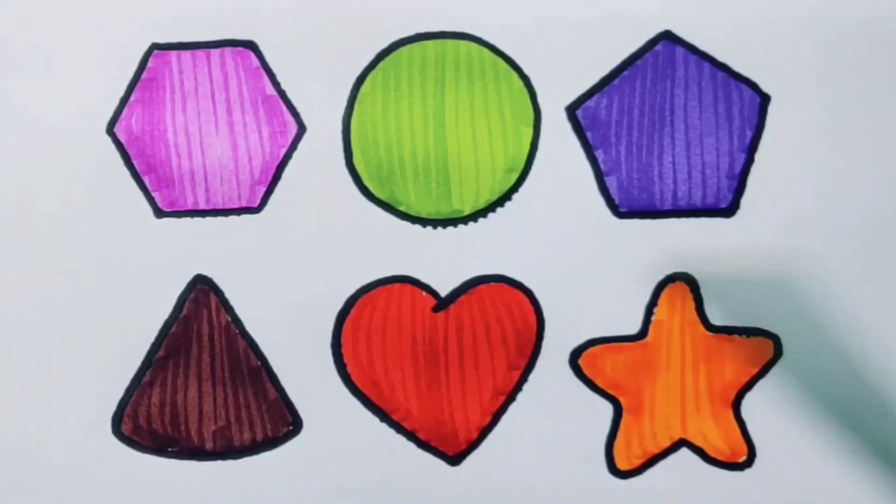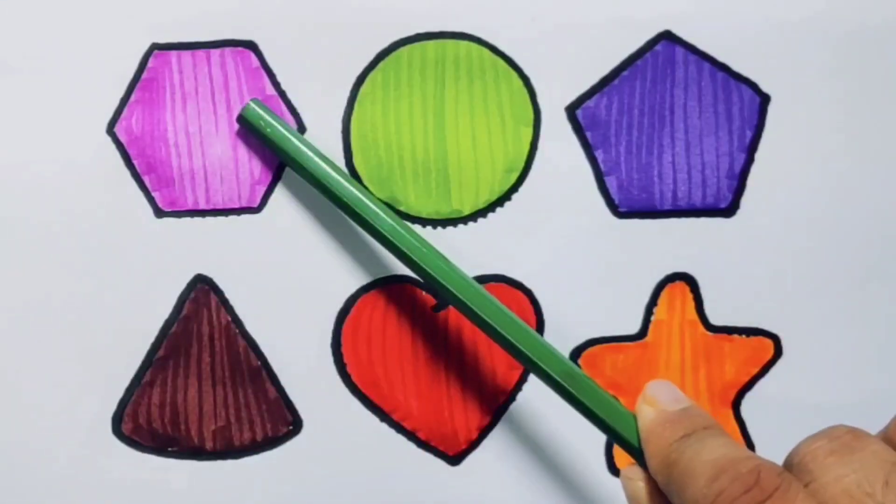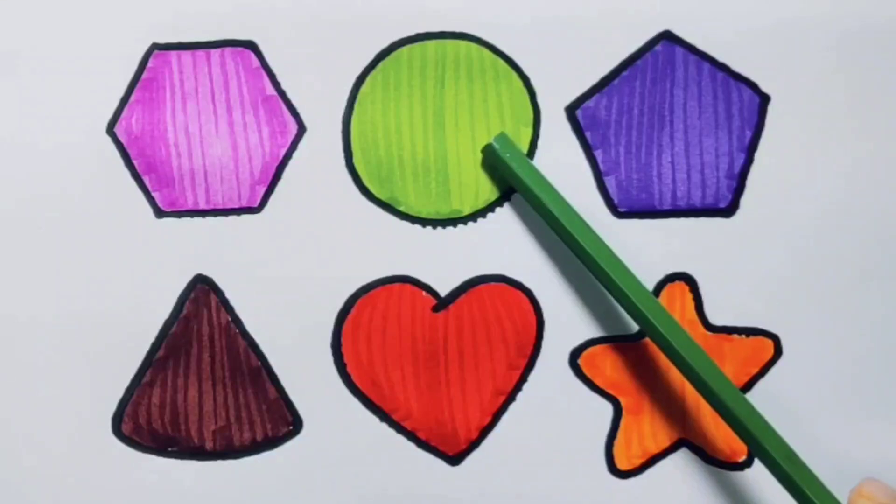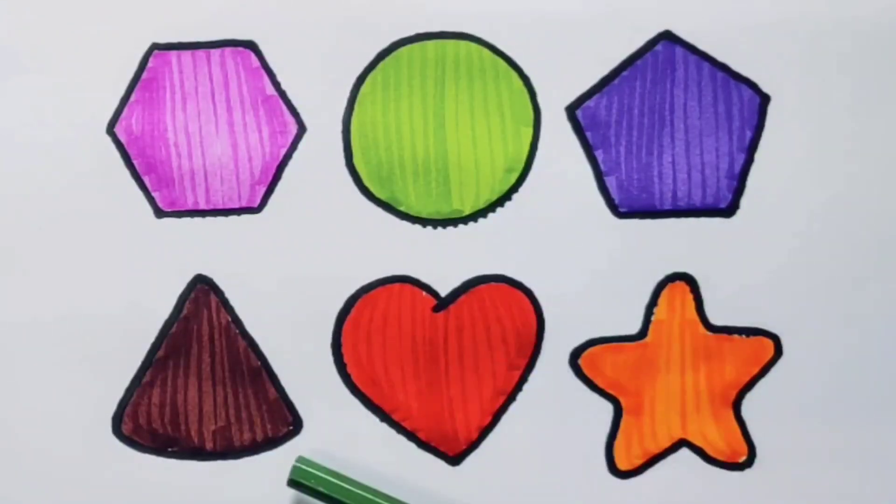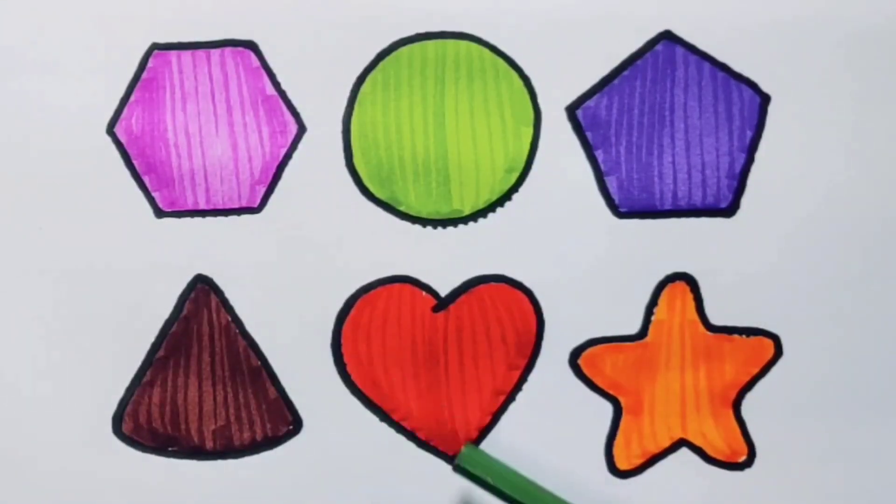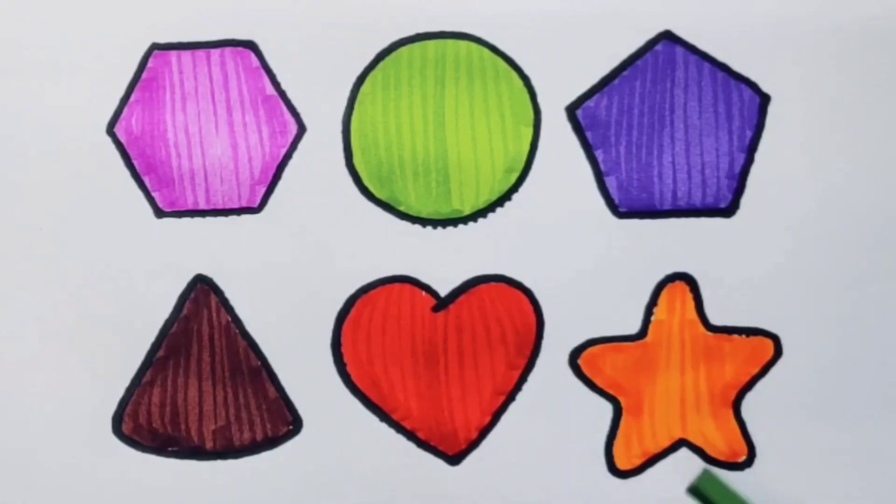What we learned: we learned pink color hexagon, green color circle, purple color pentagon, chocolate color triangle, red color heart, orange color star.